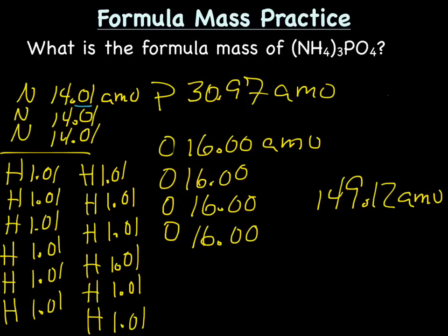And for nitrogen it's two digits after the decimal. Hydrogen, two digits after the decimal. Phosphorus, two digits after the decimal. And oxygen, two digits after the decimal. Which means my answer needs to have two digits after the decimal, which it does. So final answer: the formula mass of ammonium phosphate is 149.12 amu.